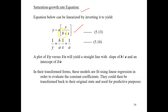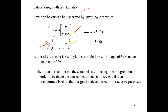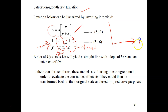The saturation growth rate equation is y equals a times x divided by (b plus x). The linearized version is: 1 over y equals (b over a) times (1 over x) plus (1 over a). A plot of 1 over y versus 1 over x will yield a straight line with slope of b over a and intercept of 1 over a.